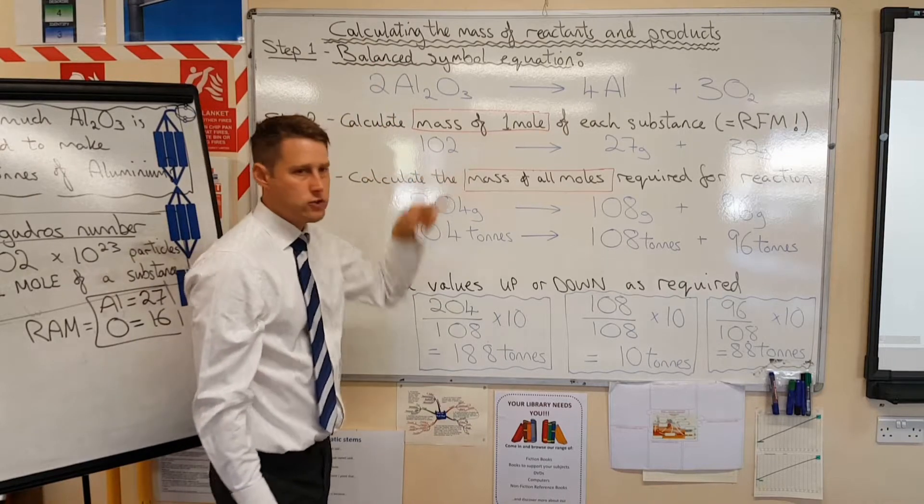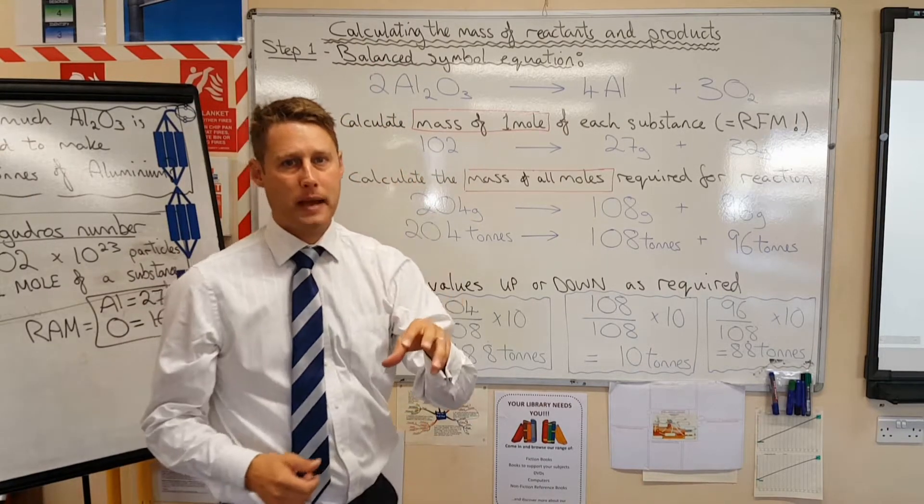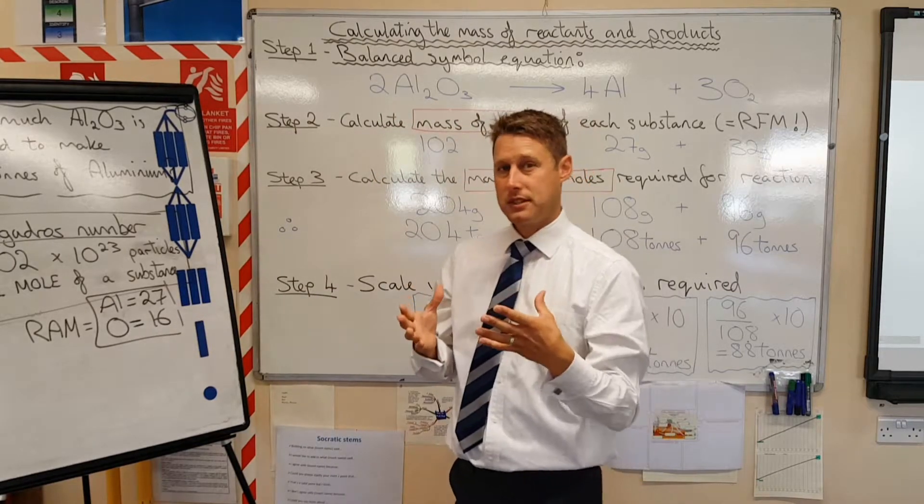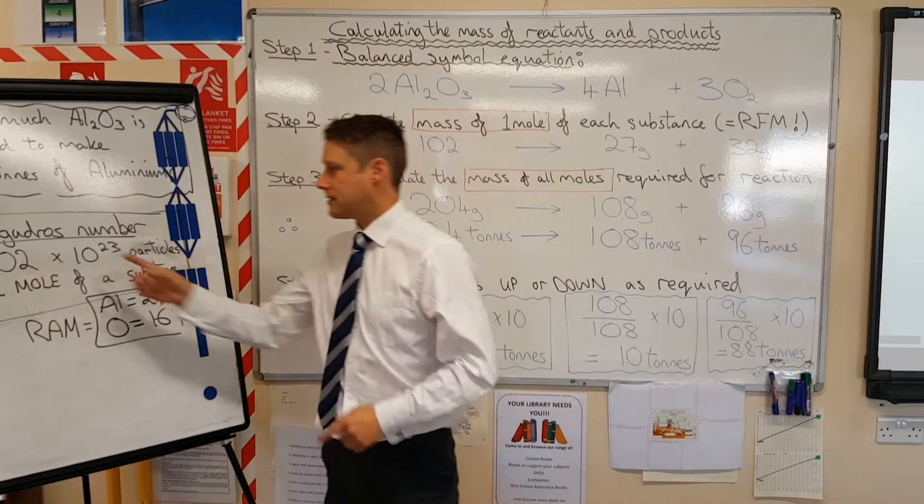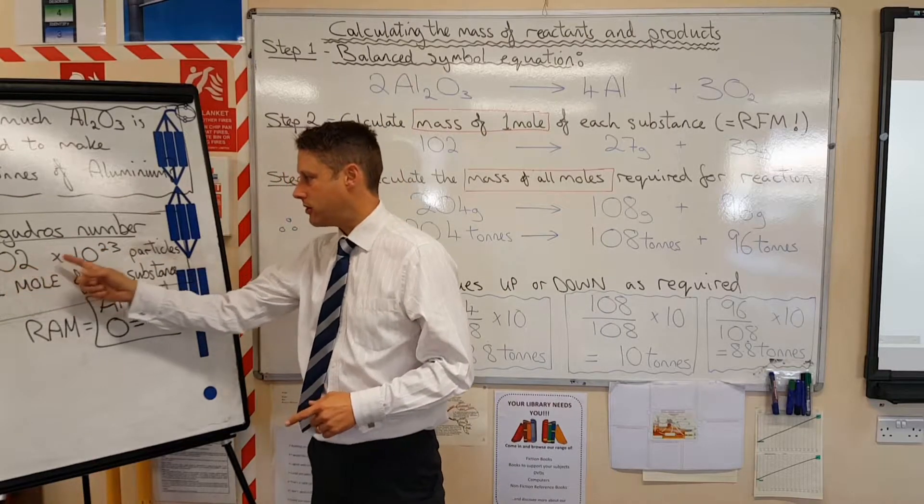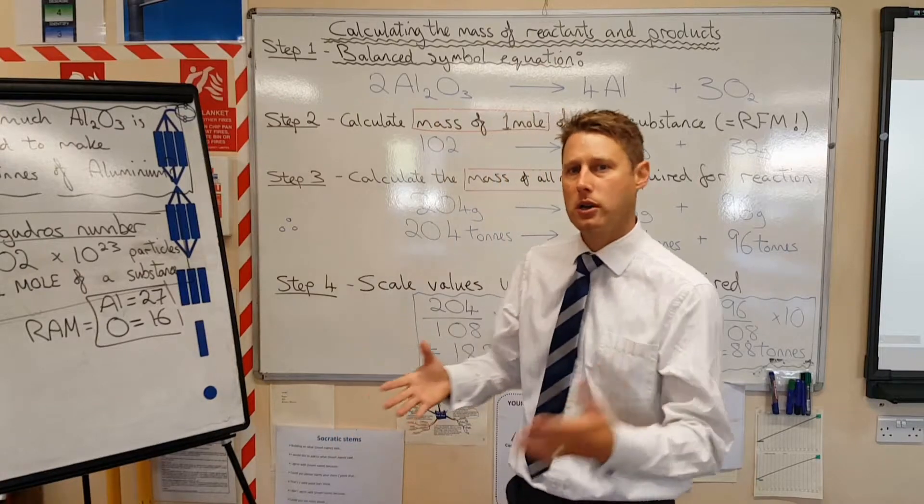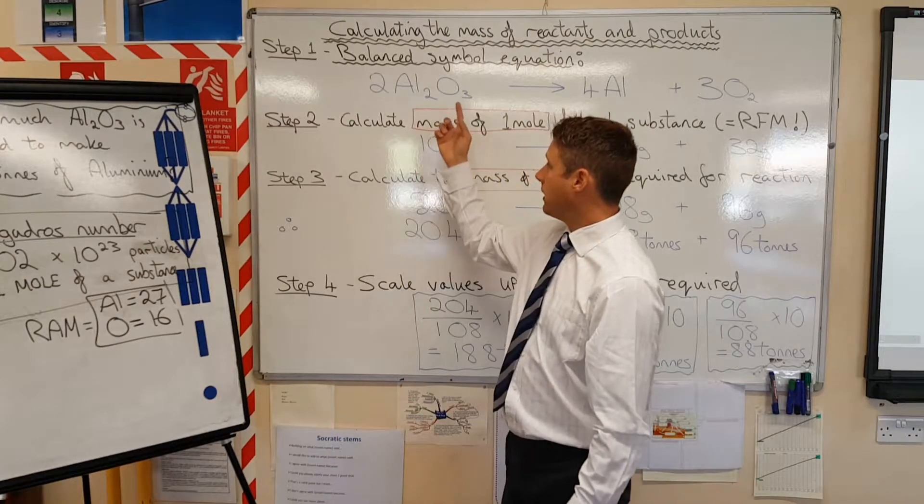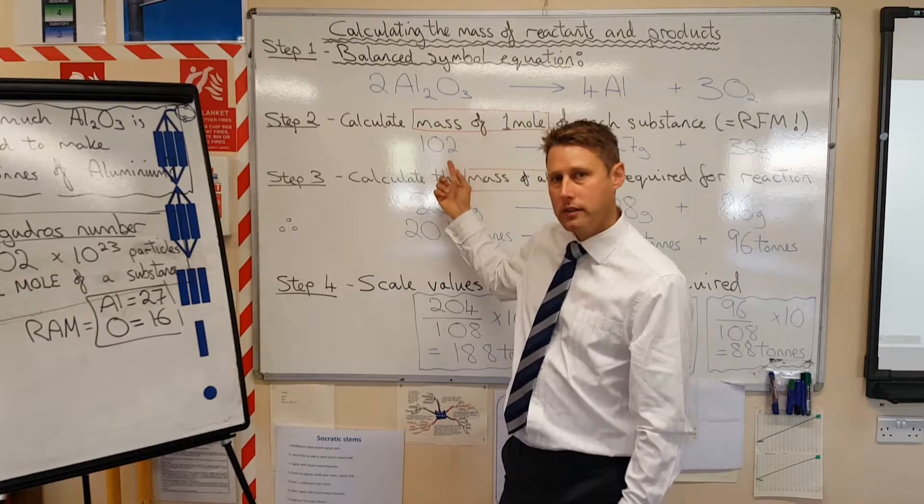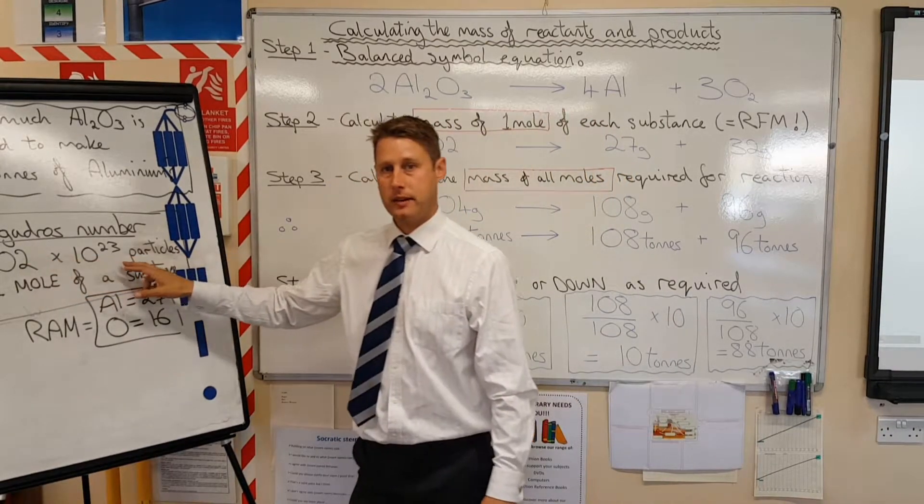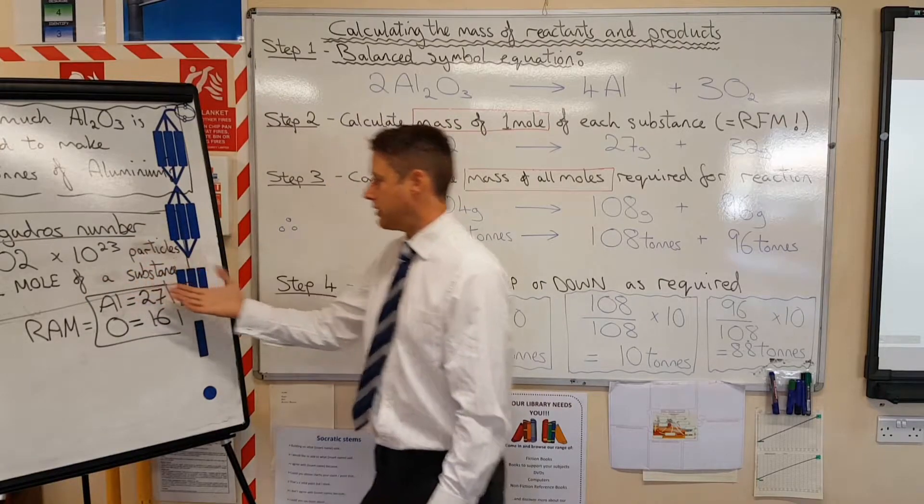Now 102 is the relative formula mass. To work out one mole, and one mole of a substance basically contains 6.02 times 10 to the 23. That's a lot. That's a lot of atoms or a lot of molecules in one mole of this stuff. So one mole of any substance has that number of particles in.